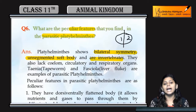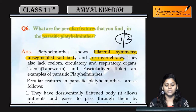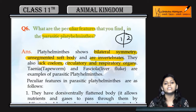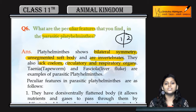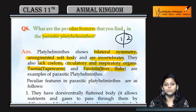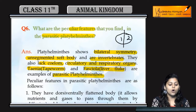They lack a vertebral column and are therefore known as invertebrates. They also lack a coelom — there is no body cavity present. They lack circulatory and respiratory organs as well. Since there is no respiratory organ, they cannot respire with oxygen, so their respiration is anaerobic. Examples include Taenia, which is the tapeworm, and Fasciola, which is the liver fluke — both are parasitic platyhelminthes.